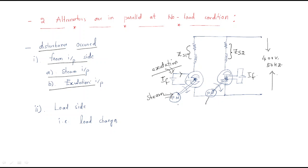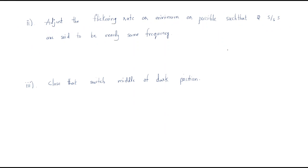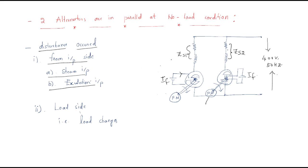For the load side, if the load changes, some disturbance will occur in the alternators. By analyzing these disturbances we can understand how synchronization power is transferred from the input side to the load, or from one alternator to another alternator. This covers synchronization methods and how alternators are operated in parallel.